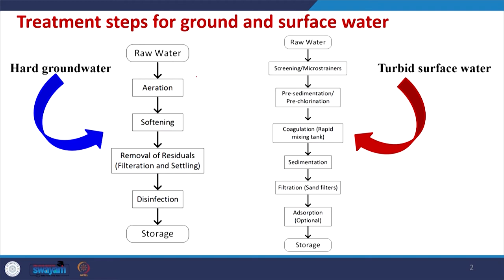For ground water, the first step is aerating the water. This is done because ground water coming from a confined aquifer may still contain some gases, or the amounts of oxygen and CO2 may be either lower or higher than required. Aeration is done to remove any toxic gas like H2S if present, and also to equilibrate the water with respect to the amounts of oxygen and CO2. Sometimes softening may or may not be required depending upon the presence of ions like calcium and magnesium.